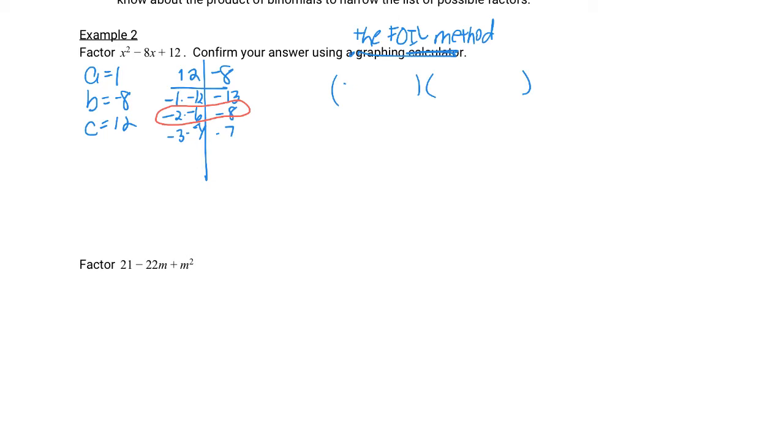So two parentheses, variable in front, factors that we found on the tail end. Let's multiply it back together and see if we did it correctly. And we can combine like terms. We did it. Hot dog.